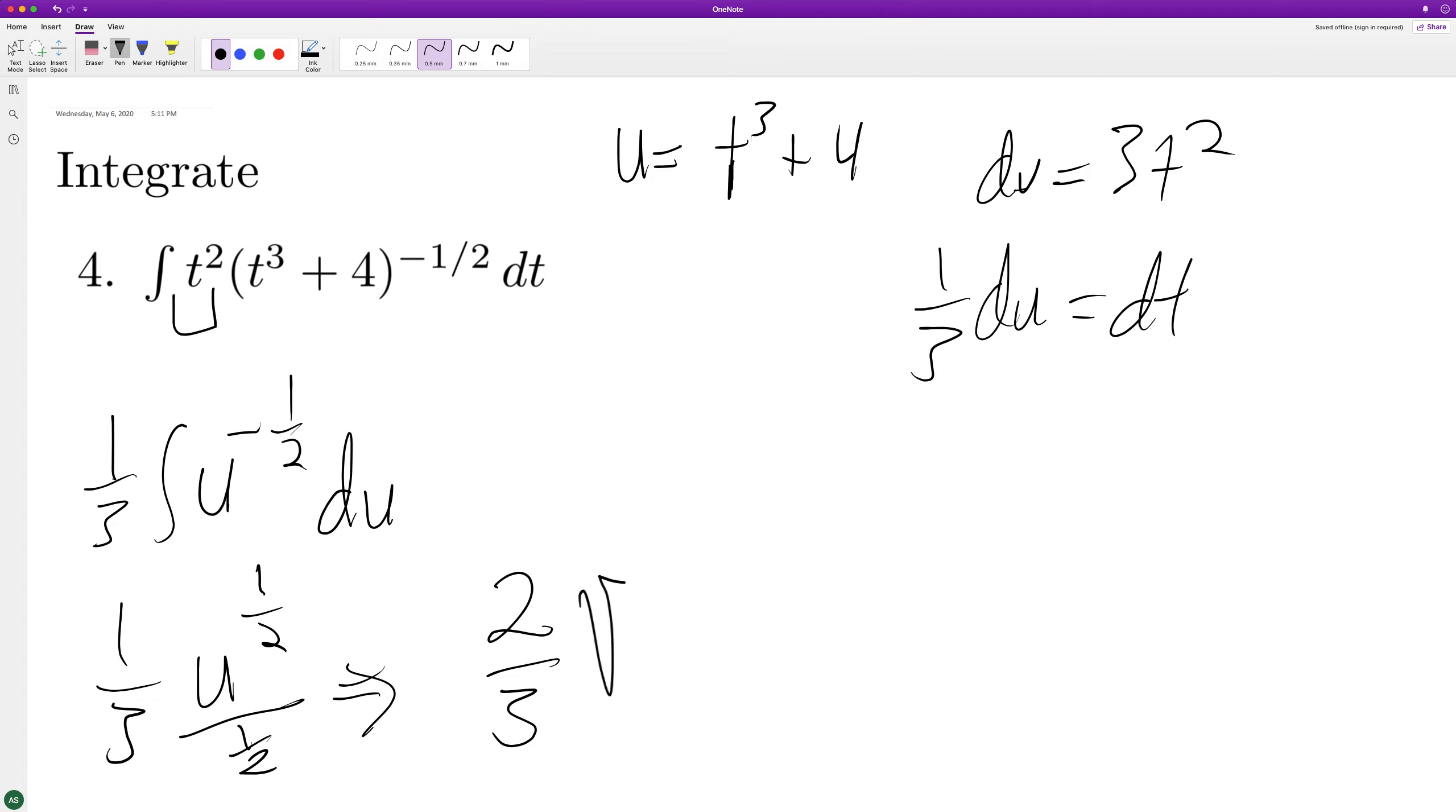Substitute in for u. So we get square root of t cubed plus 4. It's the same thing as t cubed plus 4 raised to the 1 half plus c. And that's it.